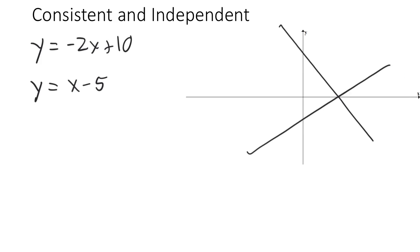This kind of a system has exactly one solution, and it is called consistent and independent.